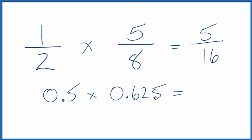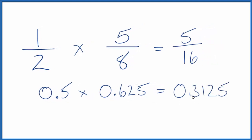And when we multiply these two numbers, we'd end up with 0.3125. So if you divide five by 16, you'll get 0.3125.